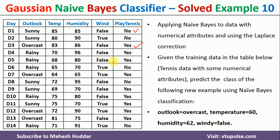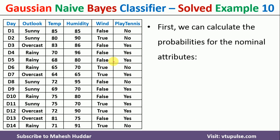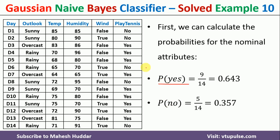In the Naive Bayes classifier, the very first thing we need to do is calculate the prior probabilities, that is probability of yes and probability of no. Probability of yes is equal to the number of yes examples divided by total number of examples. We get 9 yes examples out of 14, so 9 by 14 is probability of yes. Similarly, we have 5 no examples out of 14, so probability of no is equal to 5 by 14.